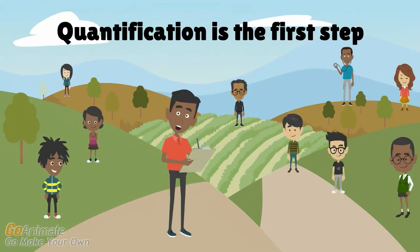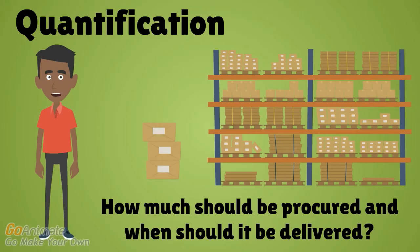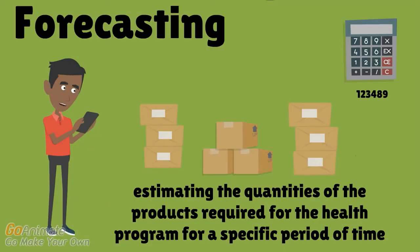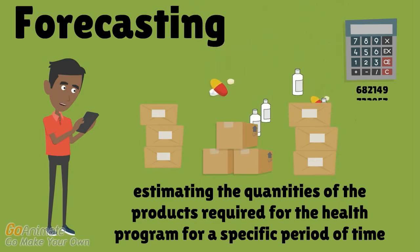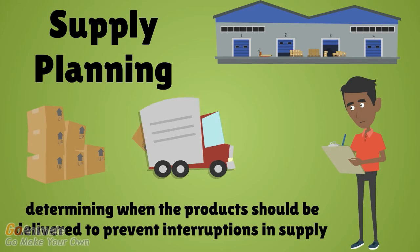Quantification is the first step to ensuring there are enough products in the system so that community health workers have the supplies they need to treat children. Quantification answers the question: how much should be procured and when should it be delivered? It includes both forecasting — estimating the quantities of products required for the health program for a specific period of time — and supply planning, determining when the products should be delivered to prevent interruptions in supply.